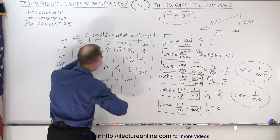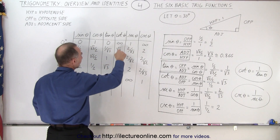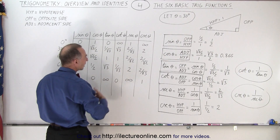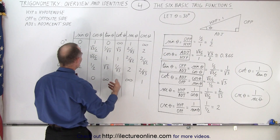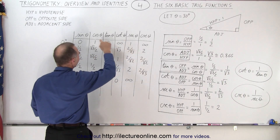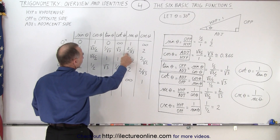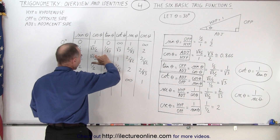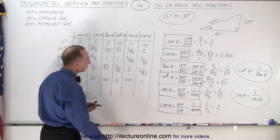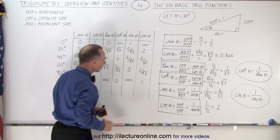For the cotangent — remember it's the inverse of the tangent — you get infinity, √3, 1, 1/√3, and 0. The secant is the inverse of the cosine: 1 over 1 = 1, then 2/√3, and so on, with infinity when you divide by 0. The cosecant is that same row but completely turned around in the other direction.